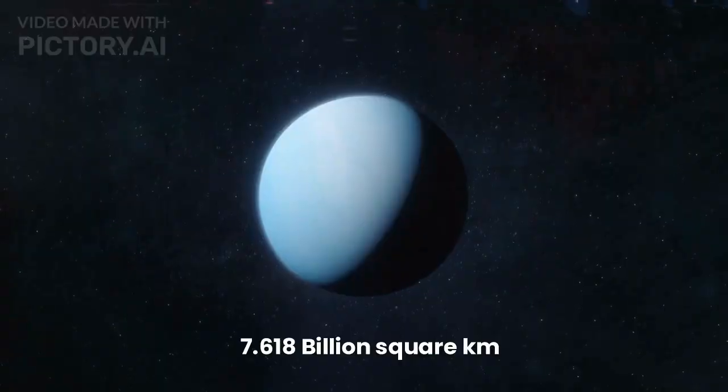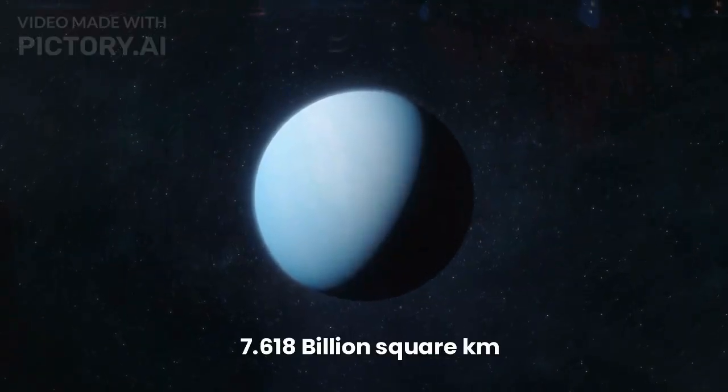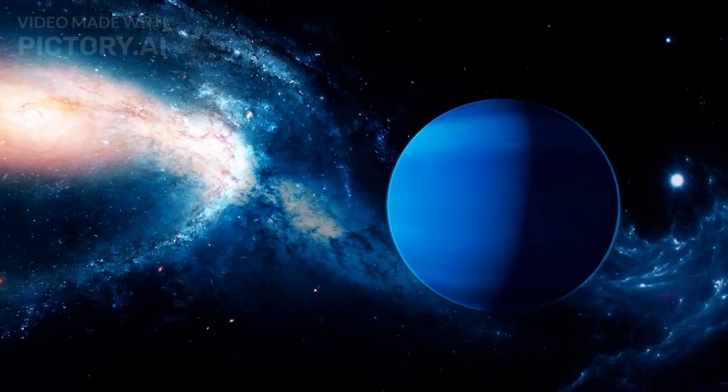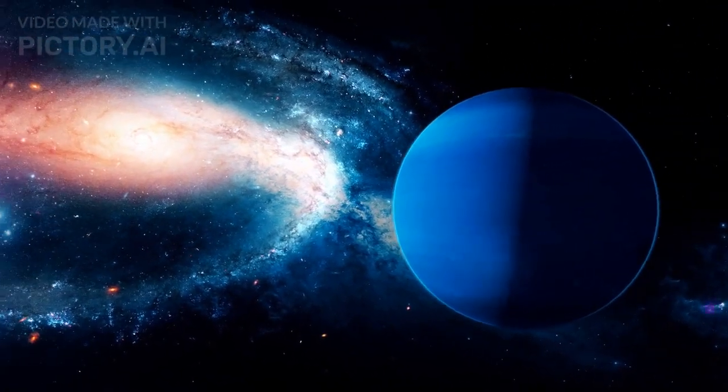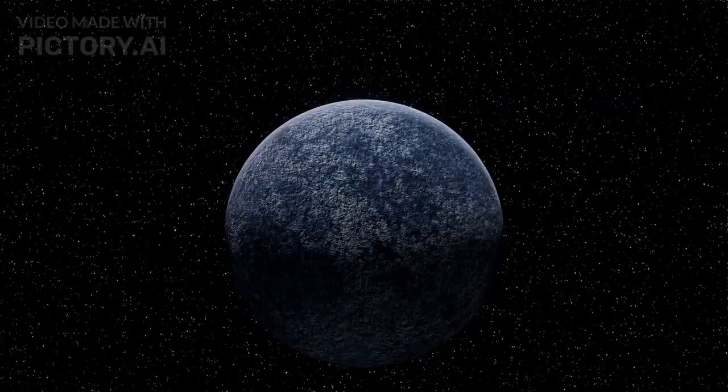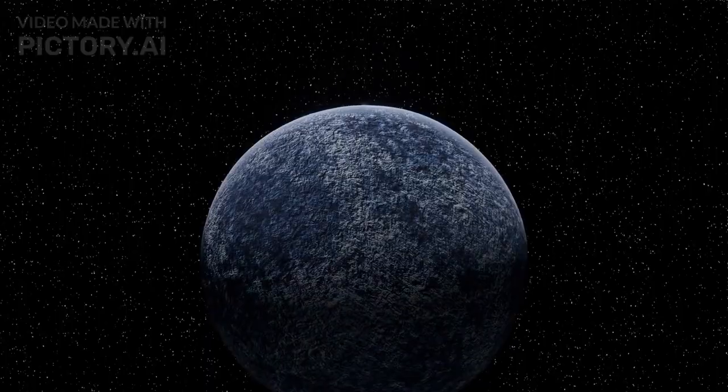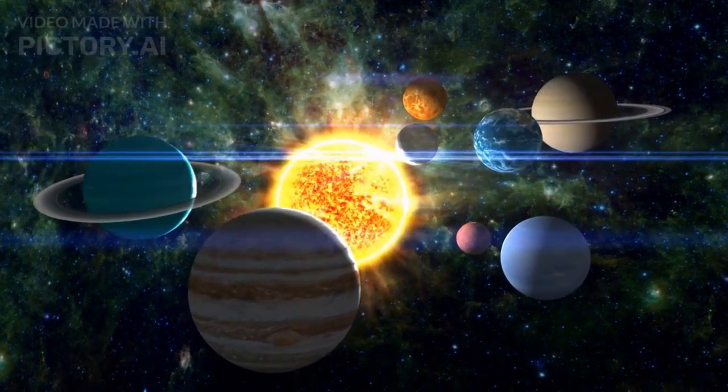The surface area of Neptune is 7.618 billion square kilometers. Neptune, the outermost giant planet, displays a striking blue color due to methane in its atmosphere. The great dark spot and other storms highlight its dynamic weather patterns. Its largest moon, Triton, orbits in the opposite direction to Neptune's rotation, suggesting a capture from the Kuiper belt.